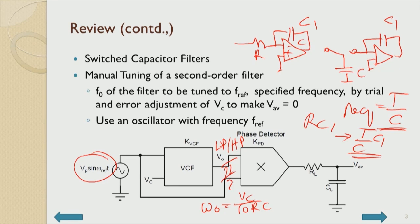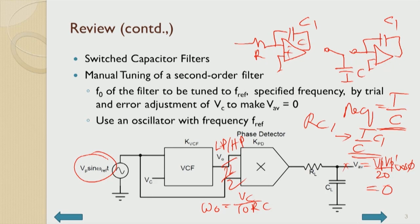This phase shift of π/2 can be tested by the multiplier, which gives at this point V_average = Vp·sin(ω_ref·t) · Vp'·sin(ω_ref·t + φ) = Vp·Vp'/20 · cos(φ). So when φ = π/2, this average goes to 0. That is a measure of tuning — this was covered in the last lecture — and in simulation we could accurately adjust this voltage to go to 0, thereby making sure that ω₀ is exactly equal to ω_ref. This mode of operation is going to be automatized now.